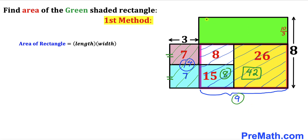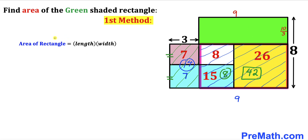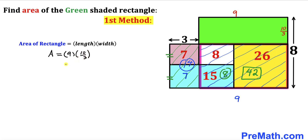So this side length of the green rectangle is also 9 units. Applying the area formula with length 9 and width 10 over 3: the area of the green rectangle is 9 times 10 divided by 3, which simplifies to 30. So the area of the green rectangle is 30 square units. Now let me share the second method.